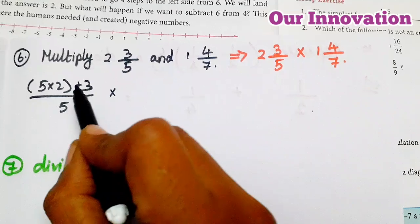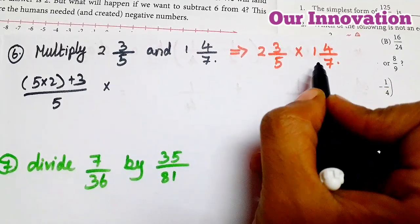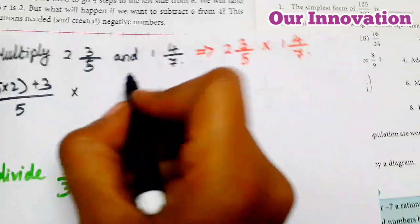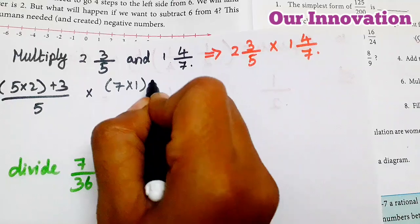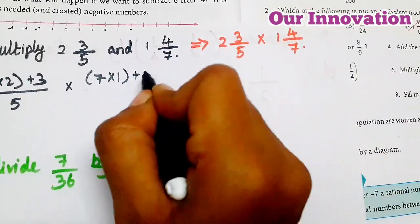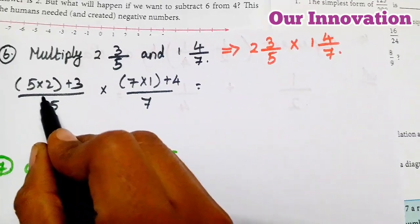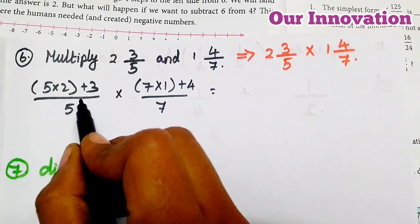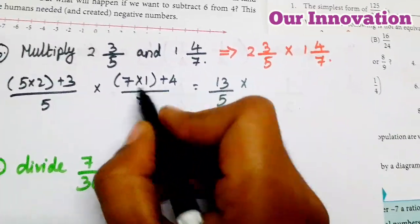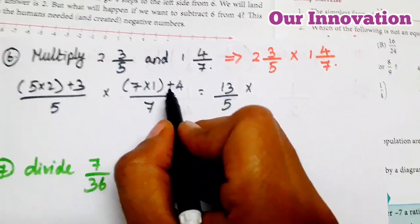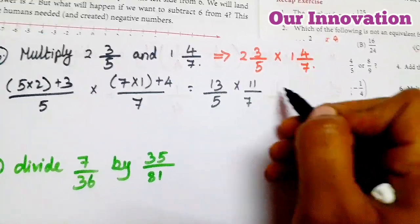Now: 5 × 2 + 3, that is (5 × 2 + 3)/5 × (7 × 1 + 4)/7. So 5 × 2 = 10, 10 + 3 = 13, so 13/5. And 7 + 4 = 11, so 11/7.